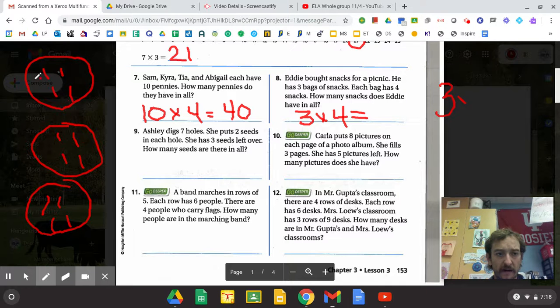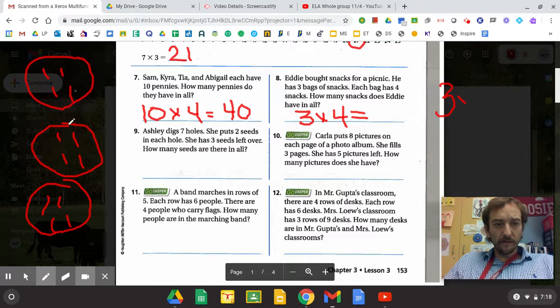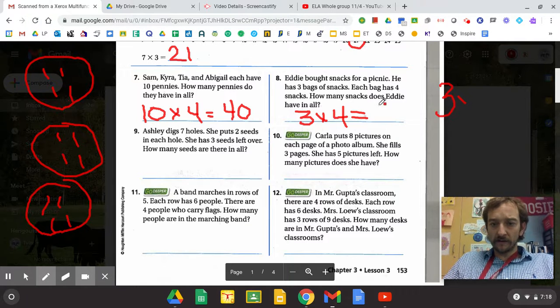So there's a couple ways we can look at this. We can think about right here how we have, we can just count our groups. And you go one, two, three, four, five, six, seven, eight, nine, ten, eleven, twelve. So my answer is twelve.